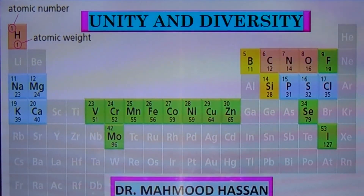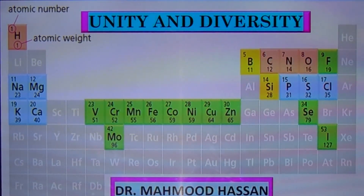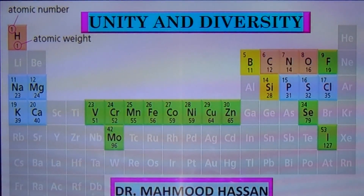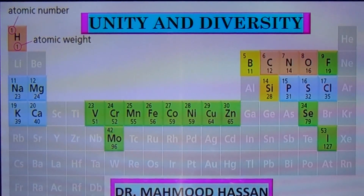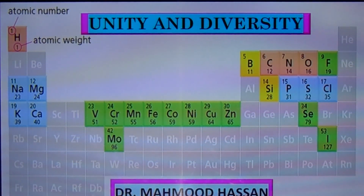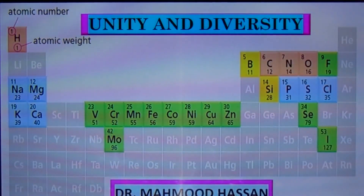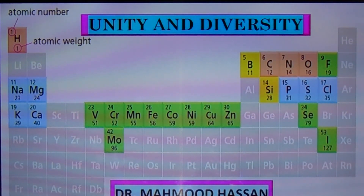The periodic table shown on this slide illustrates that out of the 118 elements found on the earth, living organisms are made up of only 25. The four elements highlighted in red constitute 99% of the total number of atoms present in living organisms, and about 96% of their total weight.